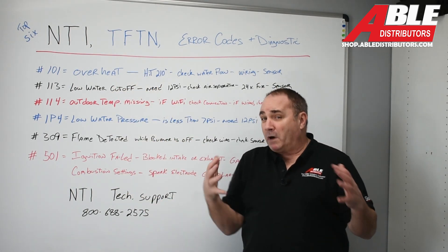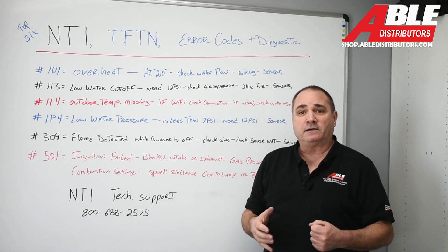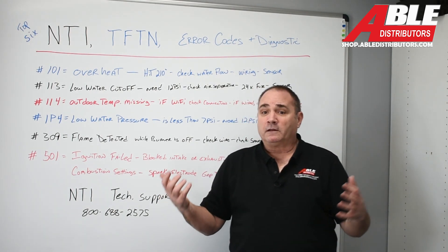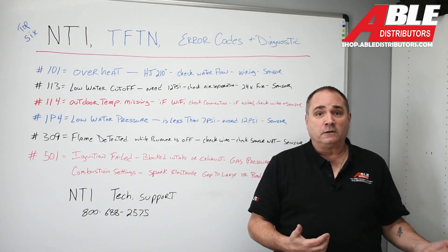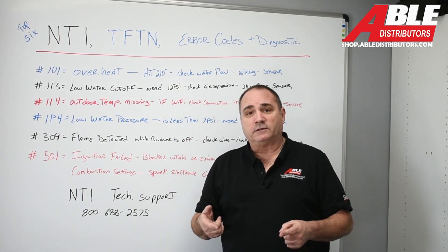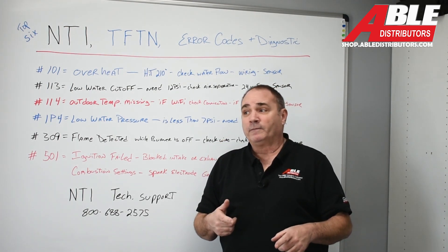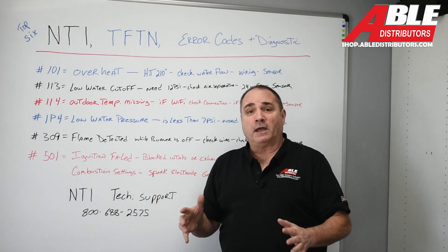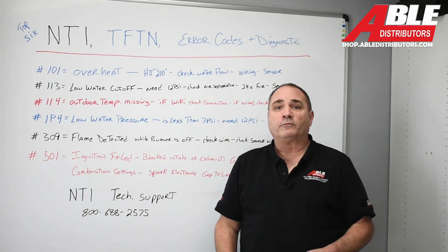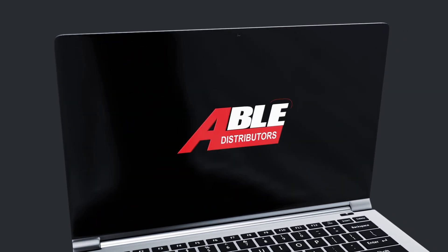These are probably the most popular codes you'd come across. We've had great success with the NTI boilers, and typically if they're installed correctly and flows are good, we don't see any of these. You only get one chance to do it right the first time — make sure you do it right. All of this is in the manual for the TFTN Errors and Diagnostics. Brian Dulesky, thank you.